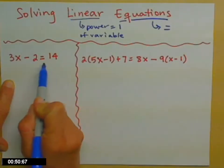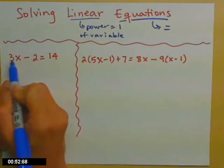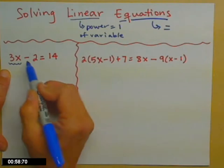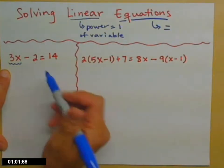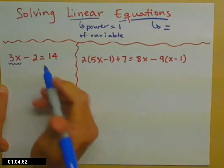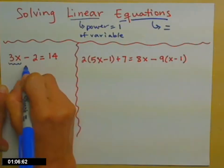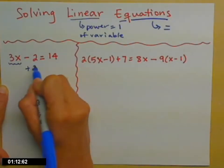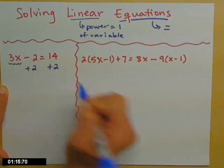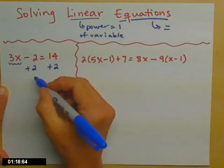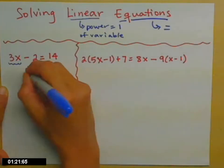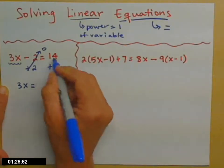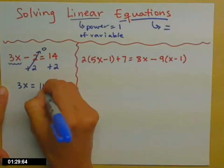When I look at this first equation, I want to start by isolating the x term on one side. Here's my term with the x's in it. Currently on that side of the equal sign, it has a minus 2. I need that minus 2 to move. So I'm going to add the opposite — the opposite of minus 2 is plus 2. Whatever I do to the left side, I have to do the exact same thing to the right side. The minus 2 plus 2 becomes 0, and that gets me the 3x all by itself. On the right, I have 14 plus 2, which is 16.